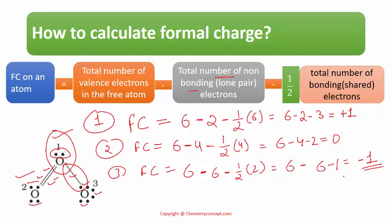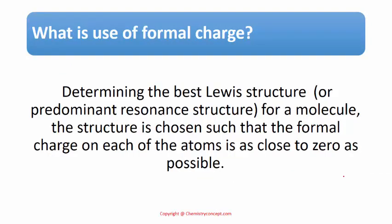So now we know what is the formal charge on all three oxygen atoms. Now what is the use of this formal charge calculation? Actually, we know that for a given molecule, sometimes there are more than one possible structure. There are more than one Lewis structure possible. There are more than one resonating structure possible. So which one is more accurate, which one is more stable, is determined on the basis of that formal charge.